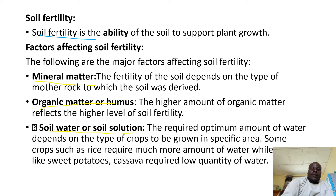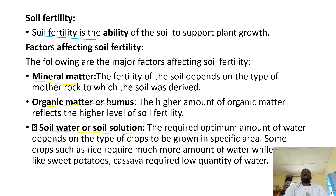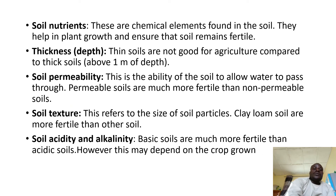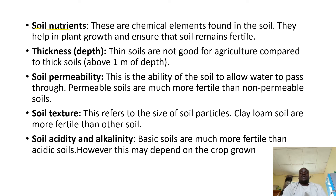Soil water — fertile soil should have water to support crop production. Soils without enough water content might not support crop growing, and this also depends on the crop. Some crops need more water than others; for example, rice is grown in wetlands and needs more water, while other crops may not need as much. Soil nutrients — potassium, calcium, sodium — these are chemical elements found in the soil. They help in plant growth and ensure that soil remains fertile.